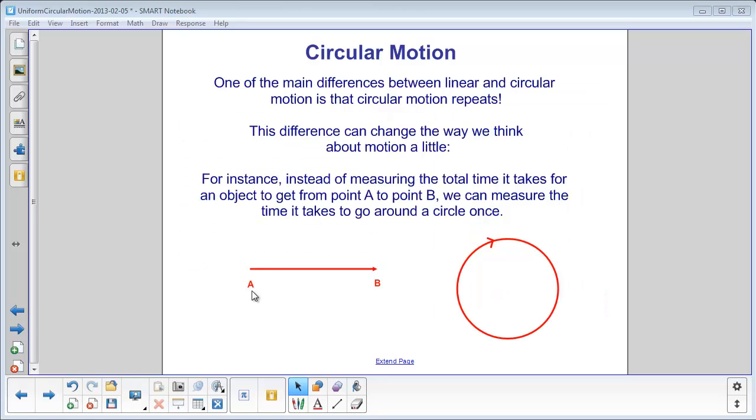One of the main differences between linear and circular motion is that circular motion repeats. Linear motion, you might start at point A and move over to point B. With circular motion, you'll keep moving in a circle over and over again.